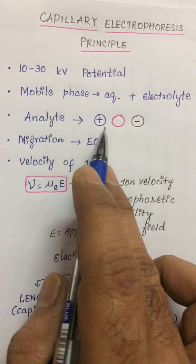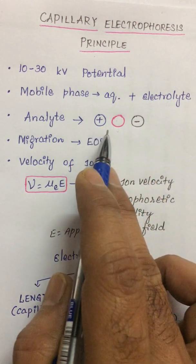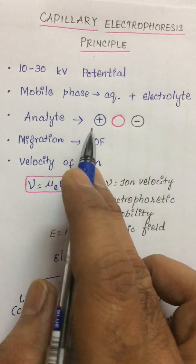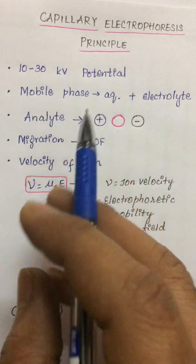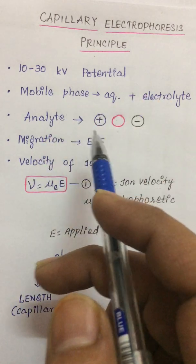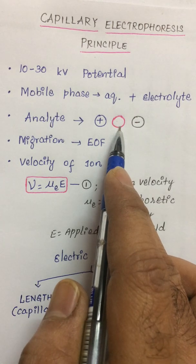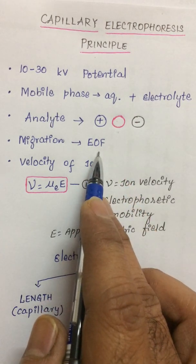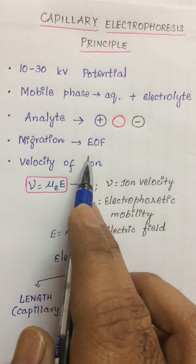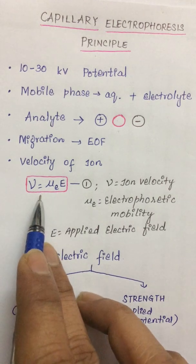The analyte chosen may contain either ionic species — cationic or anionic — or it may also contain neutral species. Ionic species migrate in the applied electric field at a rate that depends on their charge and ionic radius, but neutral species migrate due to the electro-osmotic flow. This electro-osmotic flow usually occurs towards the cathode.